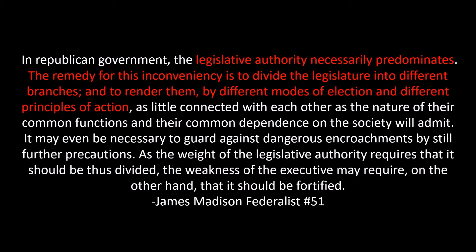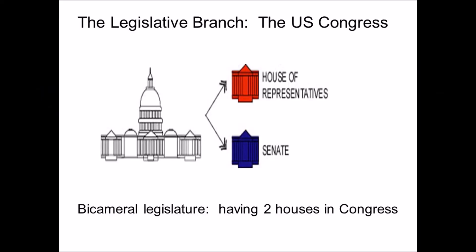This hints towards the bicameral form of government, where there is a House and a Senate. And in further Federalist papers, Madison will argue for just that.